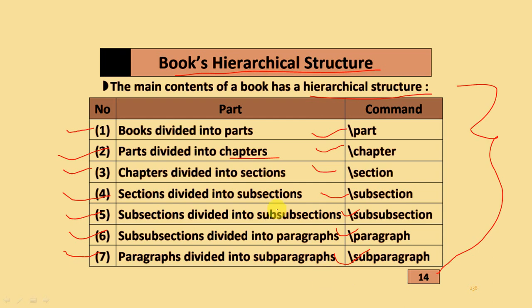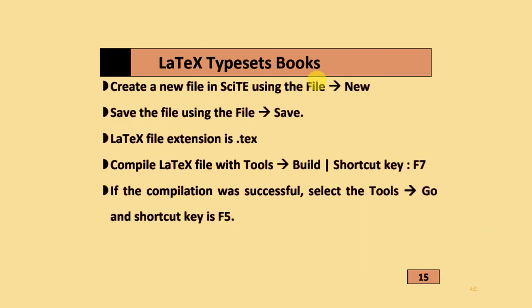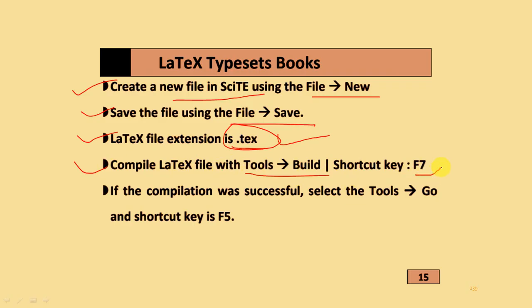To create a book in LaTeX: create a new file using File > New; save the file using File > Save — the LaTeX file extension is .tex. Compile the file using Tools > Build or the shortcut key F7. If compilation is successful, use Tools > View or the shortcut key F5 to view it.